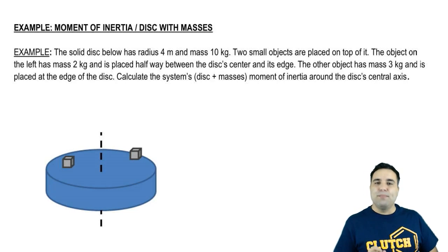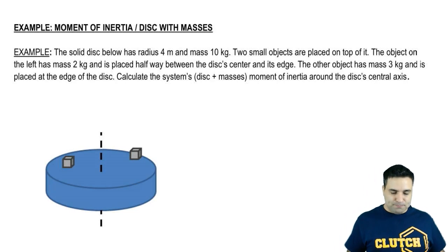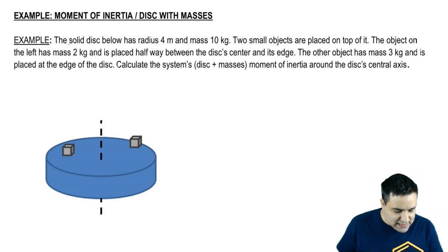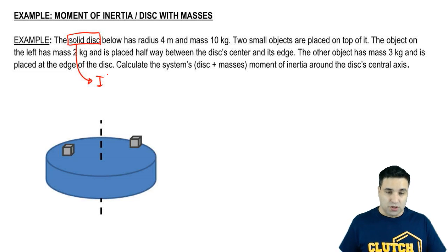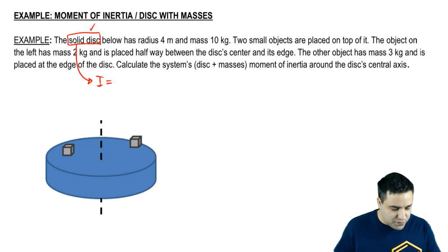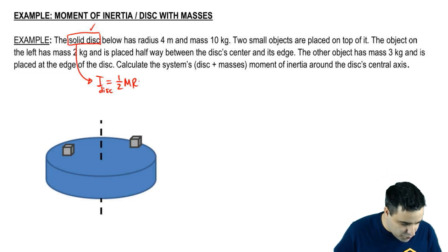Hey guys, let's check out another example of a moment of inertia problem. So here we have a solid disk. Remember, a solid disk has the same moment of inertia as a solid cylinder. And when I tell you the shape, I'm telling you which equation to use for I. So I of the disk is half MR squared.